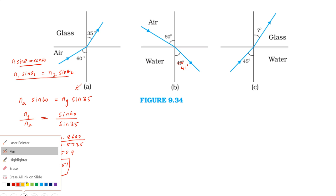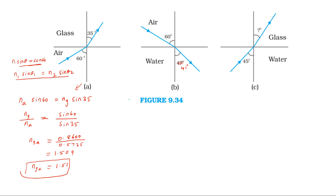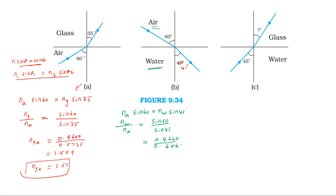Second diagram: refractive index of air into sin 60 equals refractive index of water into sin 41 degrees. Sin 60 equals 0.8660 and sin 41 equals 0.6560. Dividing, we get 1.320, so the refractive index of water with respect to air is 1.32.